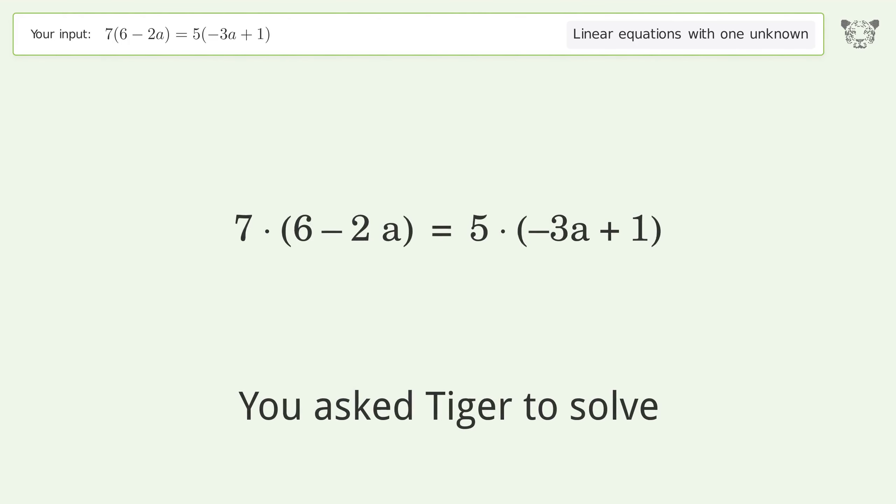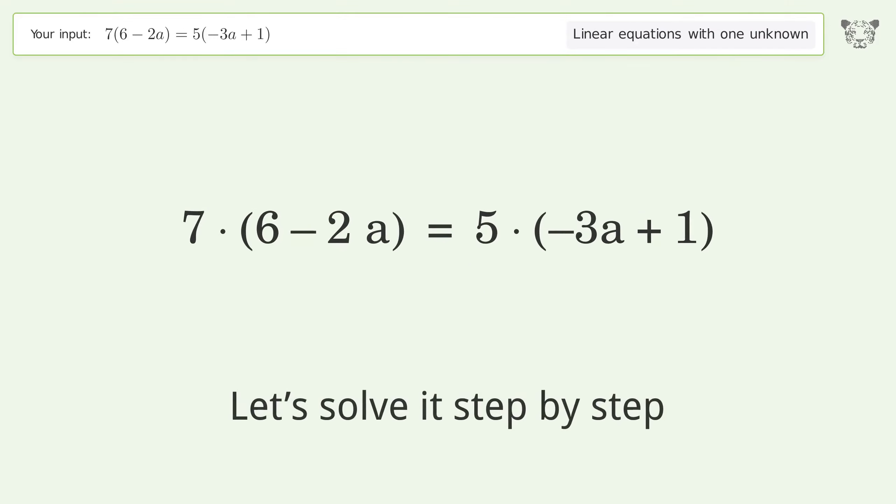You asked Tiger to solve this. This deals with linear equations with one unknown. The final result is a equals negative 37. Let's solve it step by step. Simplify the expression.